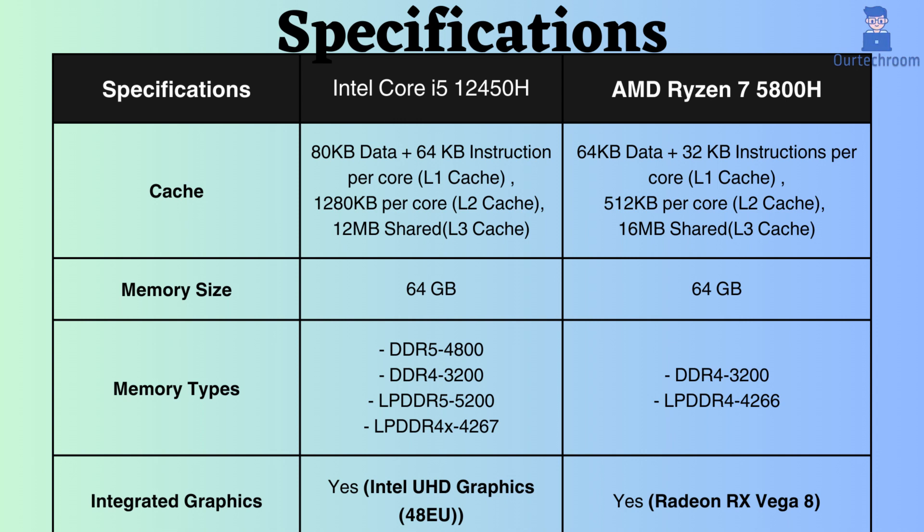The Intel processor supports DDR4, DDR5, LPDDR4, and LPDDR5, whereas the Ryzen 7 supports DDR4 and LPDDR4. The frequency support for DDR4 and LPDDR4 is similar for both processors.